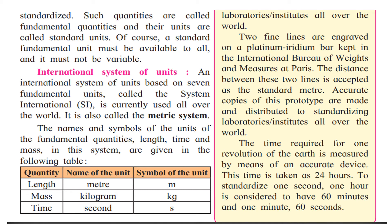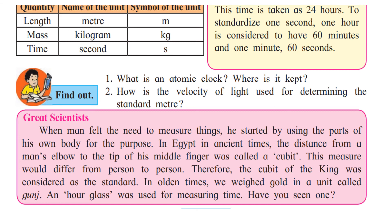The time required for one revolution of the Earth is measured by means of an accurate device, and this time is taken as 24 hours. To standardize one second, one hour is considered to have 60 minutes and one minute to have 60 seconds. That is how our 24 hours are divided into minutes, and each minute into 60 seconds.